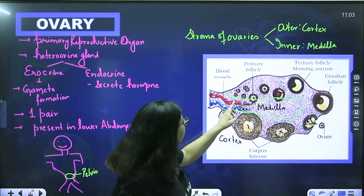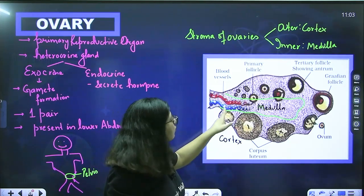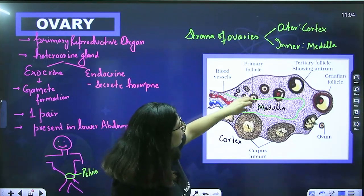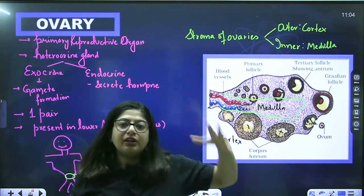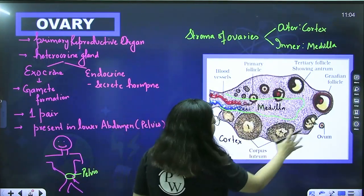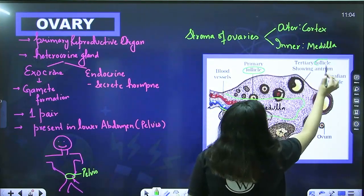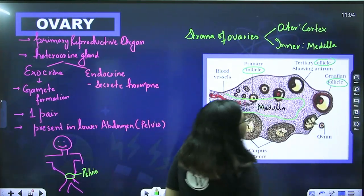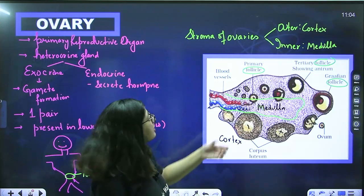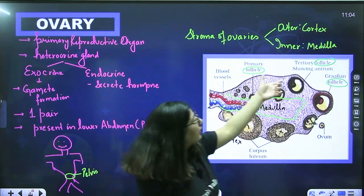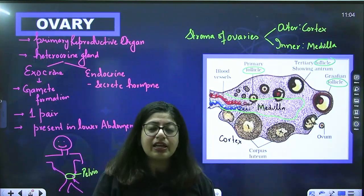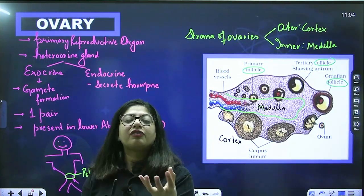In the medullary region you can find nerves and blood vessels — red arteries and blue veins. In the cortical region you can see structures known as follicles at different stages: primary follicle, then tertiary follicle, then Graafian follicle. Follicles are very important structures — inside each one is a cell that will eventually become an egg.